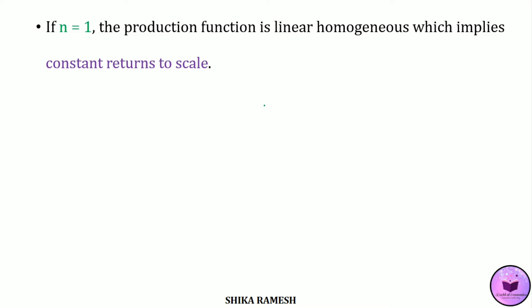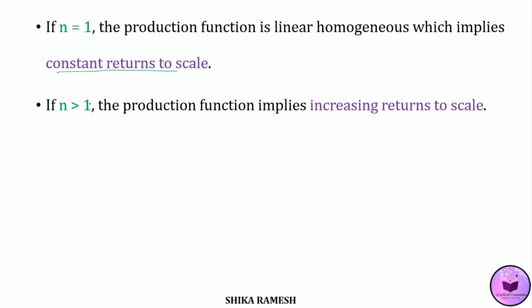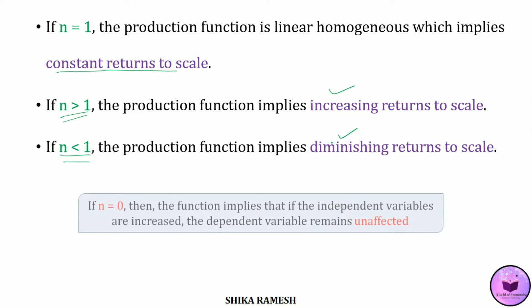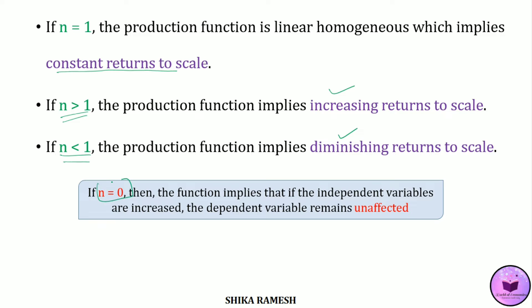If the value of n is equal to 1, then the production function implies constant returns to scale. If the value of n is greater than 1, it implies increasing returns to scale. If the value of n is less than 1, then the production function implies diminishing or decreasing returns to scale. If the value of n is equal to 0, then if the independent variables are increased in the same proportion, the dependent variable remains unaffected.